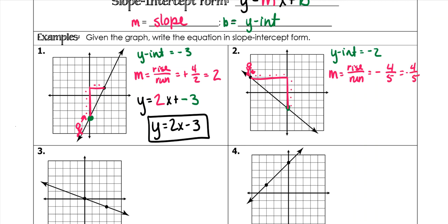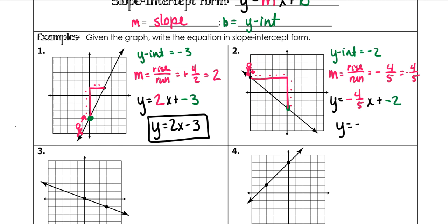When I plug that in, I have y equals negative 4 fifths x plus negative 2. So when I write my final answer, plus a negative is just minus 2, giving y equals negative 4 fifths x minus 2.